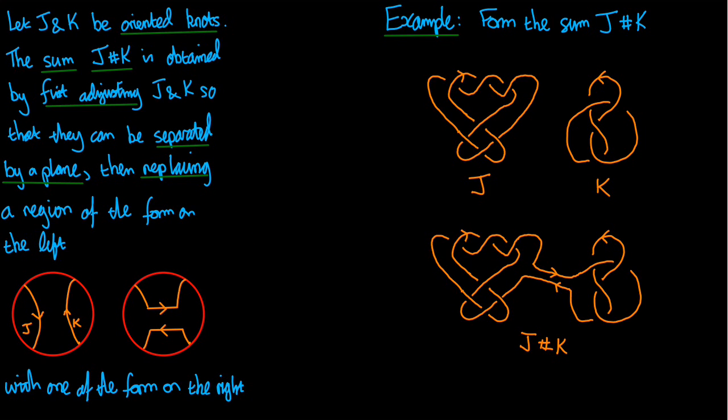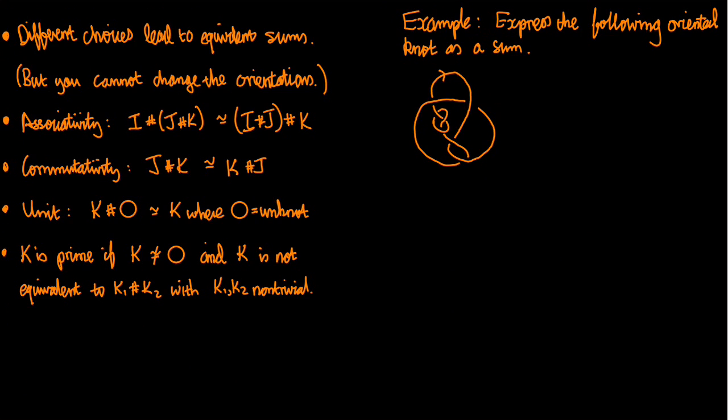Now here we have some algebraic properties of the knot sum. Well actually the first bullet point is not an algebraic one, it's a theoretical one, which is that you should have had alarm bells ringing during the first part of this mini lecture when I was telling you how to form the sum because I made lots and lots of different choices when I formed the sum. First I had to move the knots apart and separate them, then I had to choose a region, then I had to join it together. Well different choices could have possibly led to different sums. Well they don't.